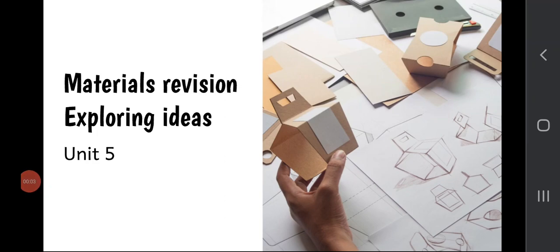This is Design and Manufacture National 5, and in this lesson we're going to revise what we know about materials. In total, we're going to revise wood, metal, and plastic, and then towards the end of the presentation we'll look at some model answers for how you would answer a materials type question in an exam.